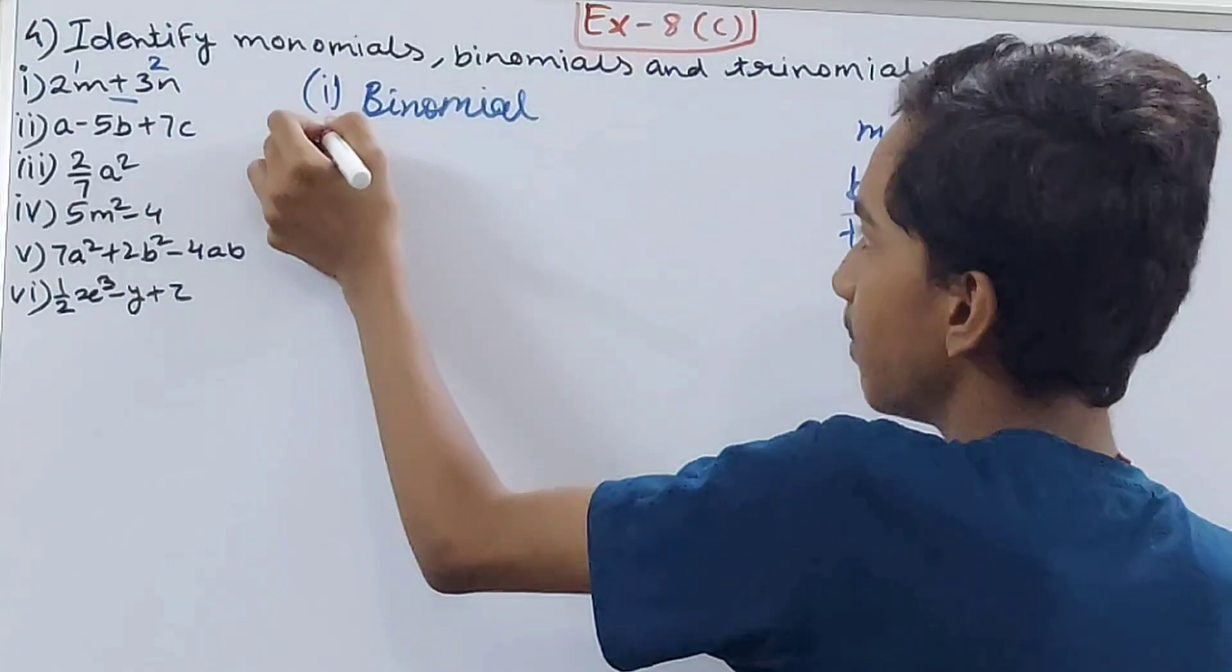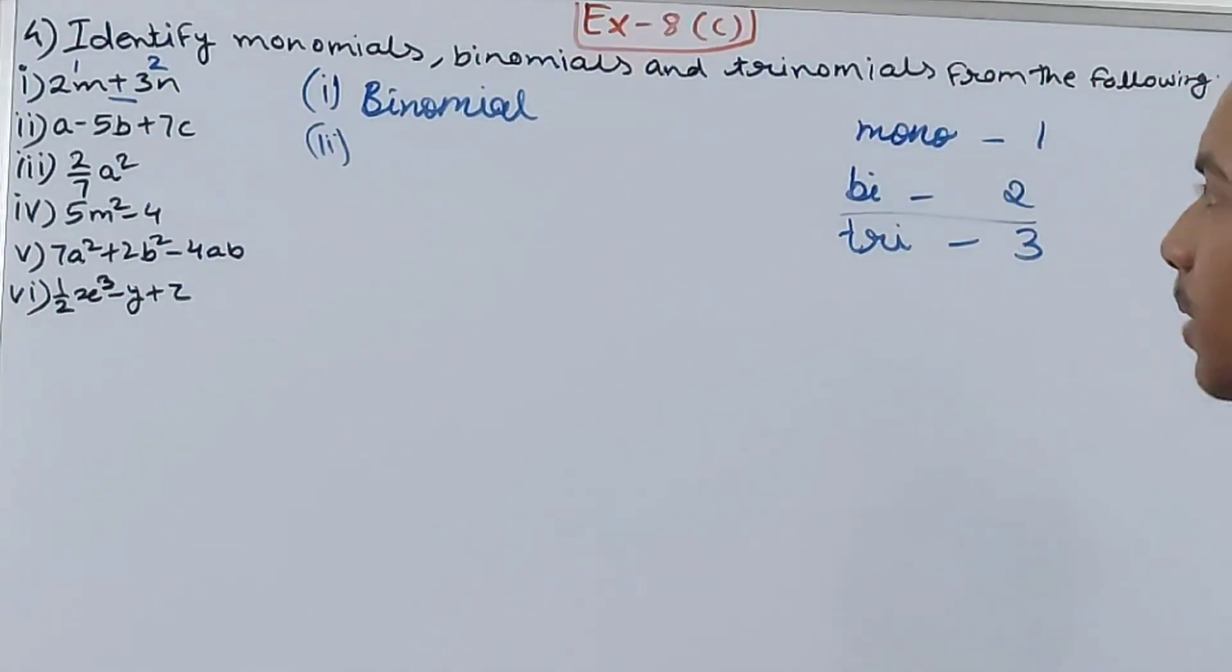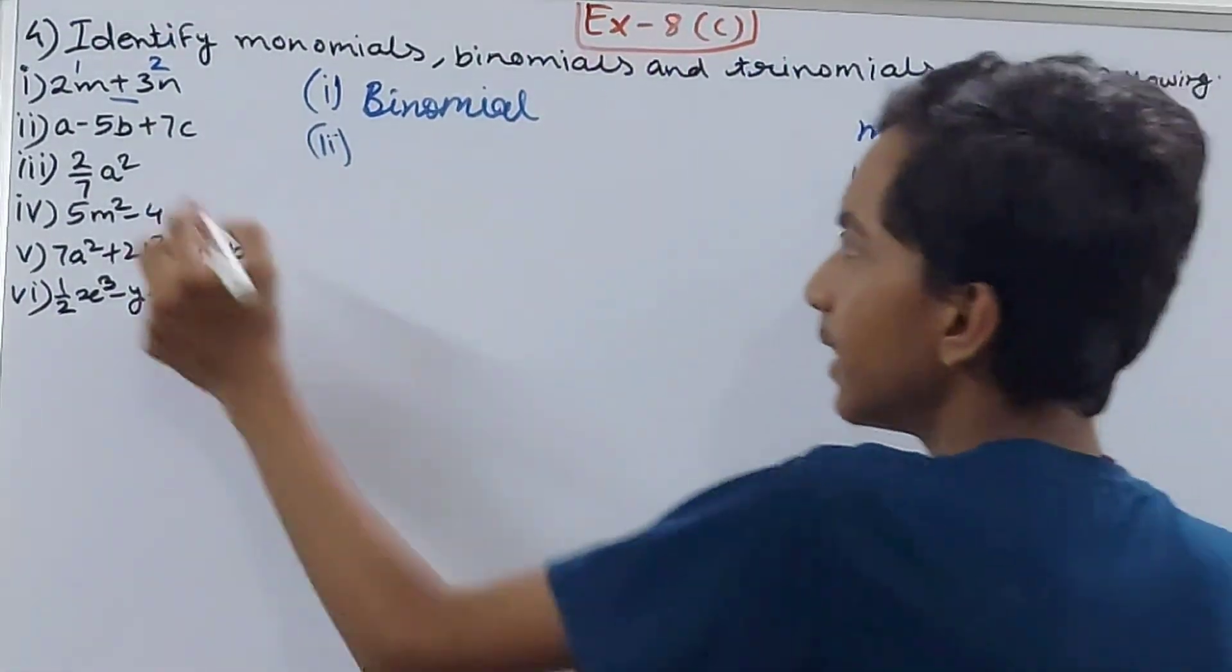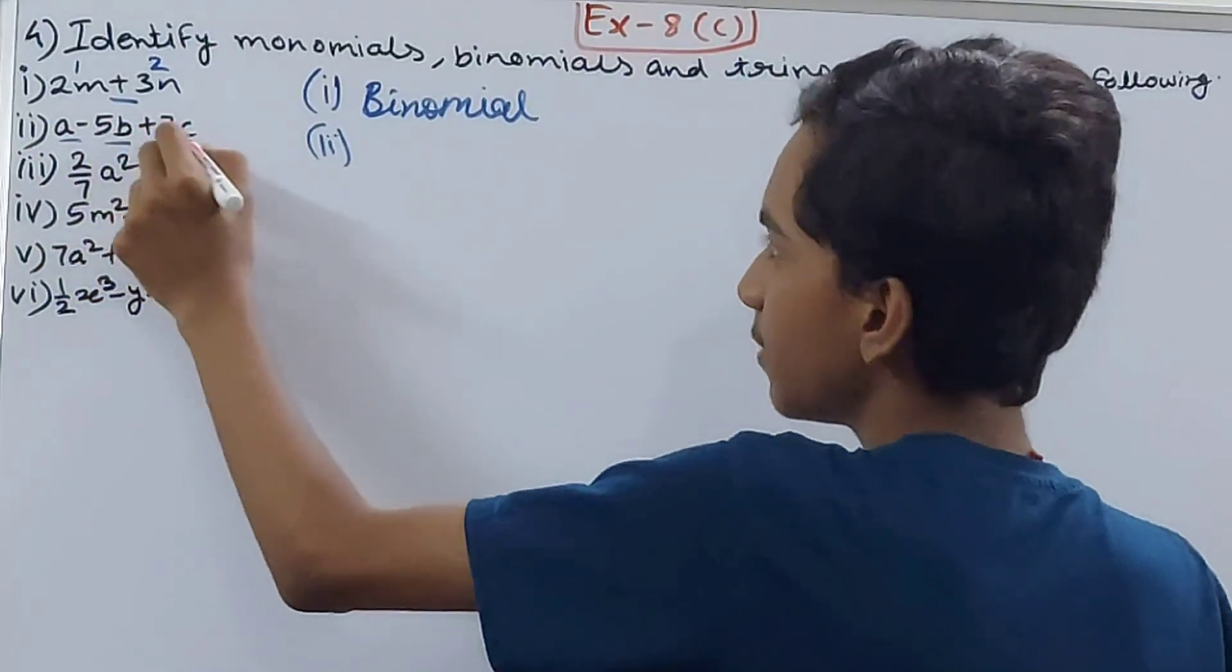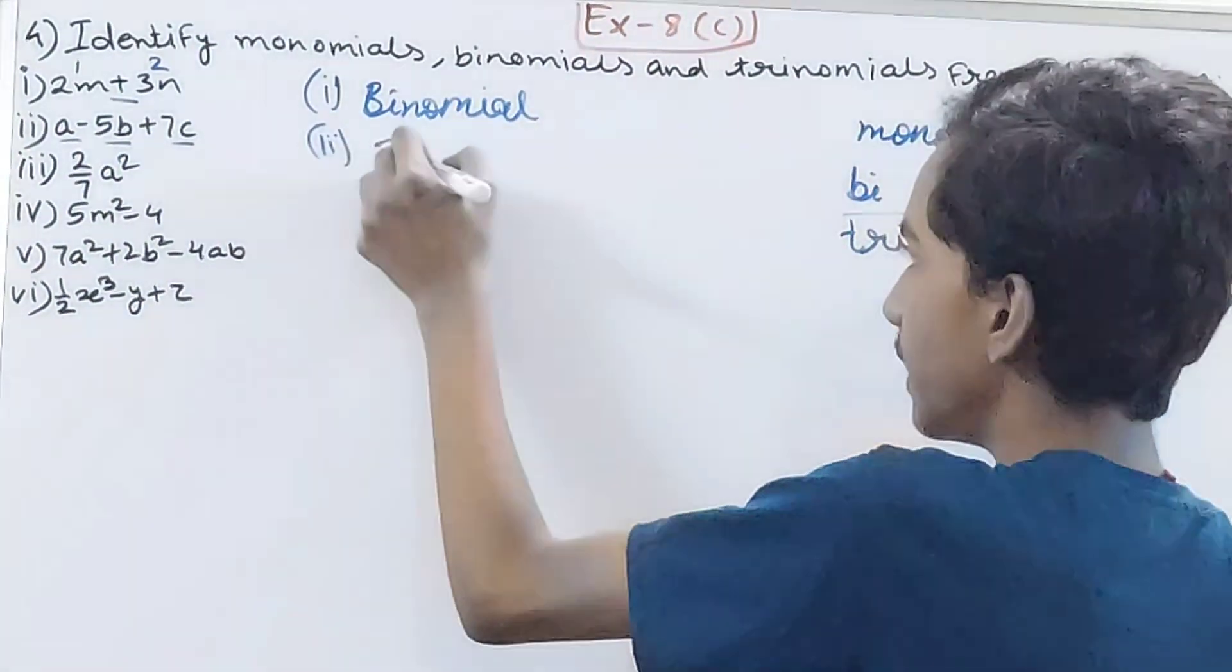The second part: a minus 5b plus 7c. Again, three terms - a, minus 5b, plus 7c. So this is a trinomial.